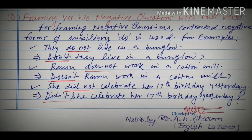Now we come to the last topic of this lecture: framing yes/no negative questions with full verbs. For framing negative questions, we use the contracted negative form of the auxiliary 'do'. For example: 'They do not live in a bungalow' — 'do not' contracts to 'don't', giving 'Don't they live in a bungalow?' 'Ramu does not work in a cotton mill' becomes 'Doesn't Ramu work in a cotton mill?' And 'She did not celebrate her 17th birthday yesterday' becomes 'Didn't she celebrate her 17th birthday yesterday?' This is how we have covered this topic, and hopefully you will definitely find it helpful.